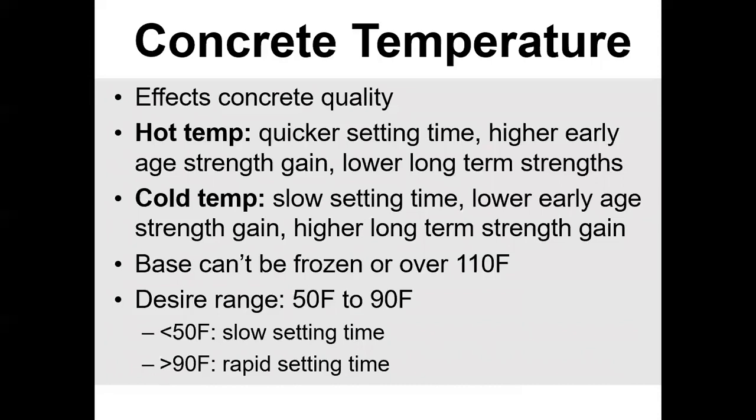Concrete temperature is very important to quality. If the concrete is real hot — 95°F or above — you're going to get quicker sets, higher early age strength gain, but lower long-term strength. You can also get plastic shrinkage cracking, drying shrinkage cracking, rapid evaporation, settlement cracking, and crazing. Be very careful with hot concrete, especially in hot weather conditions in the middle of summer. You also do not want concrete getting too cold in the wintertime.